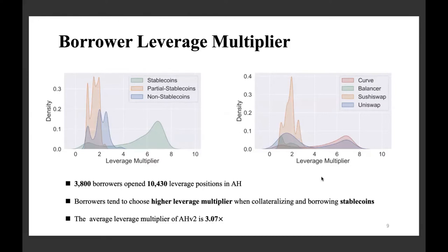We measured the distribution of leverage multipliers when borrowers choose different platforms or different tokens. We found that there are 2,800 borrowers who opened more than 10,000 leverage positions in AAVE. Interestingly, when borrowers collateralize and borrow stablecoins — such as USDT, DAI, USDC, tokens whose price doesn't change much over time — they tend to choose a higher leverage multiplier.